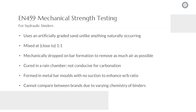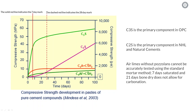The biggest issue with this standard is that you can't actually compare between brands if you're looking at the mechanical strength that comes out the other end, and this is due to the varying chemistry of the binders. If we take a couple of the more common NHL binders currently on the market — if you take Sanastia's NHL 3.5, for example, it is predominantly a mix of dicalcium silicate and lime. Dicalcium silicate has a very slow strength development, and if you're looking at your 28-day mark, it's nowhere near the final set and hardened strength of your material.